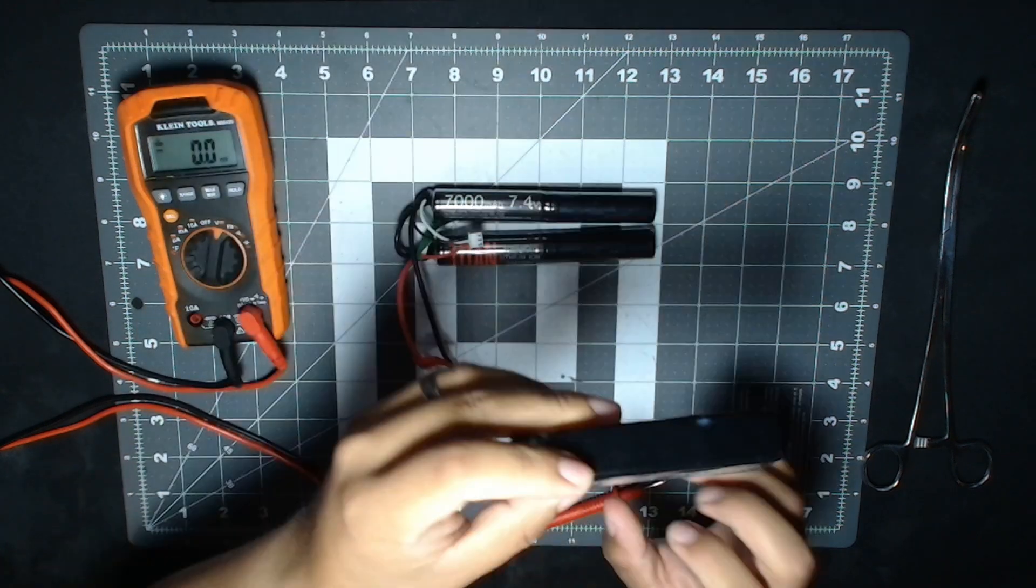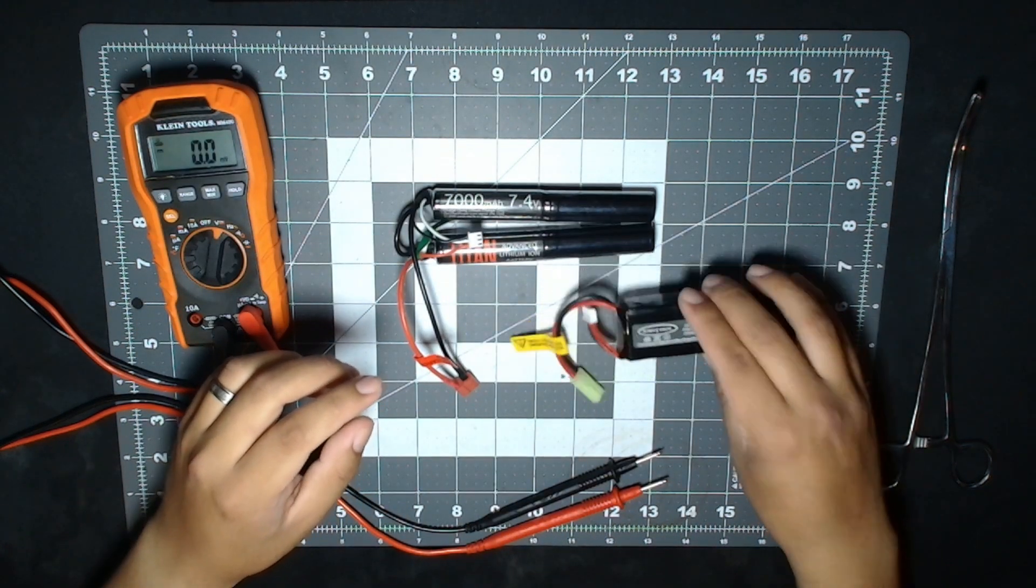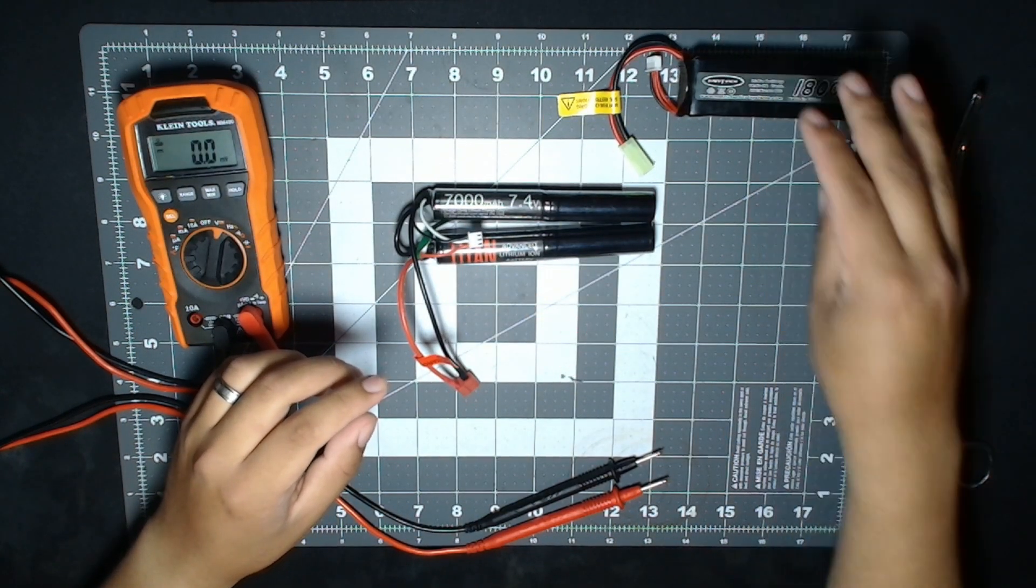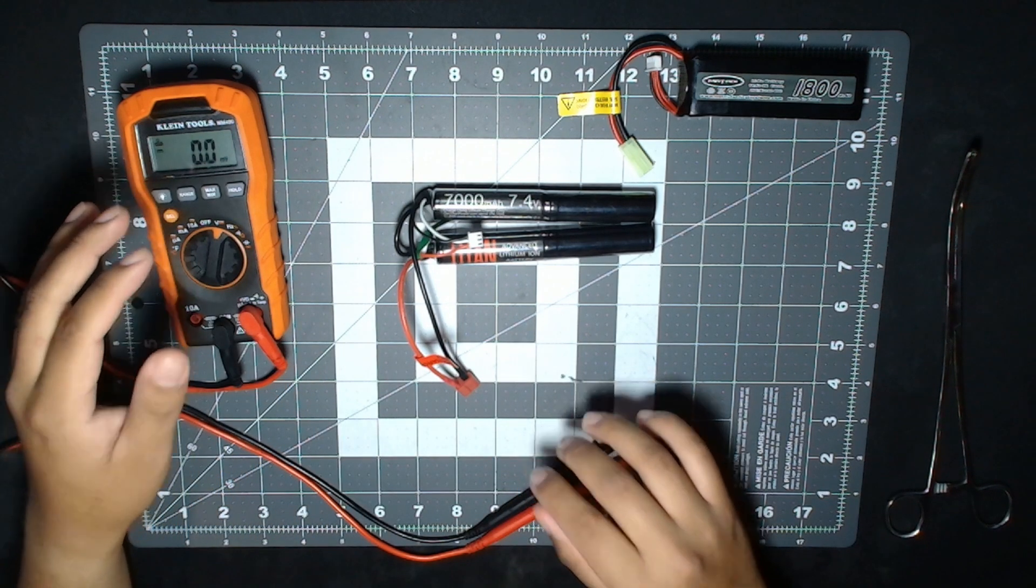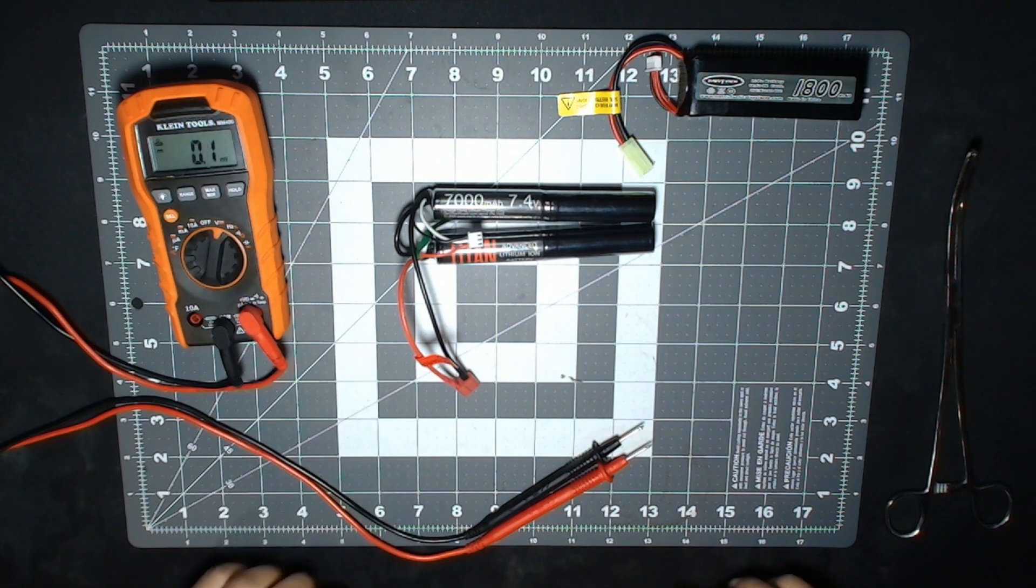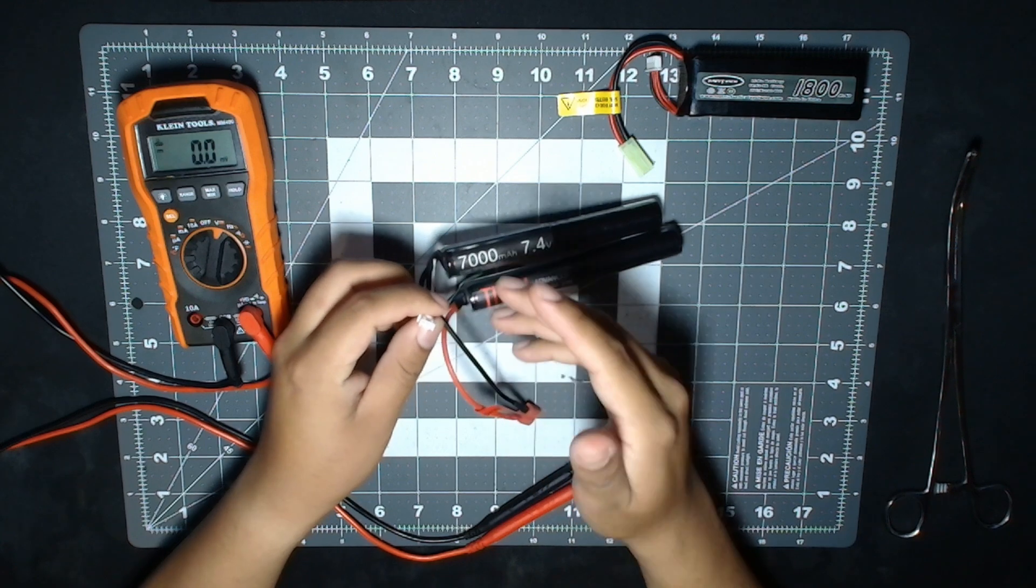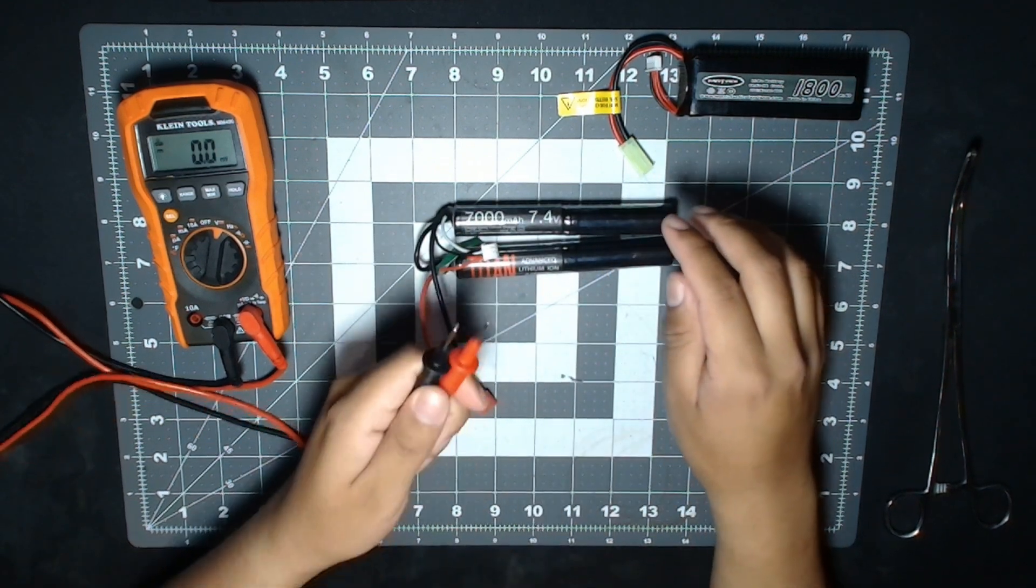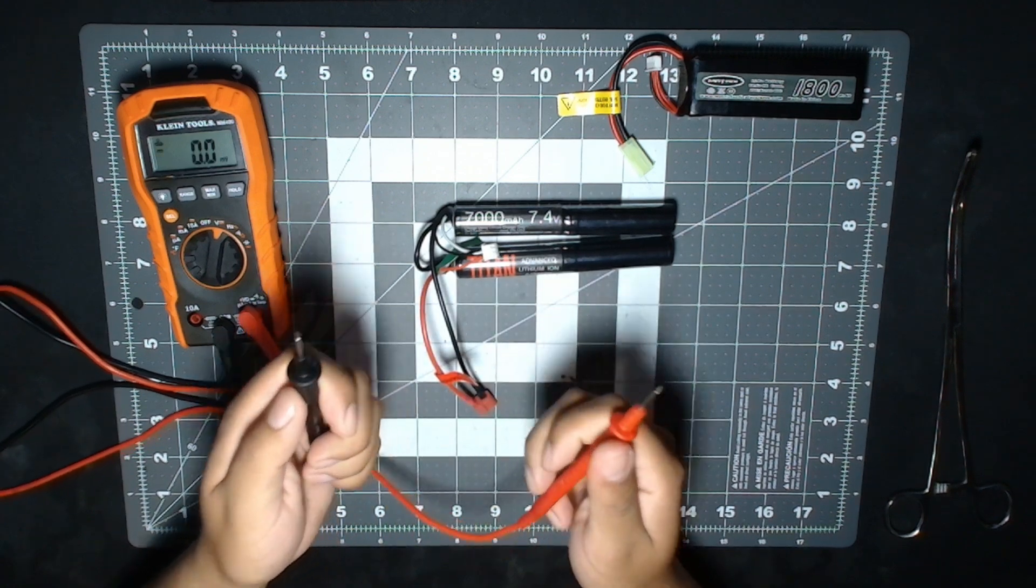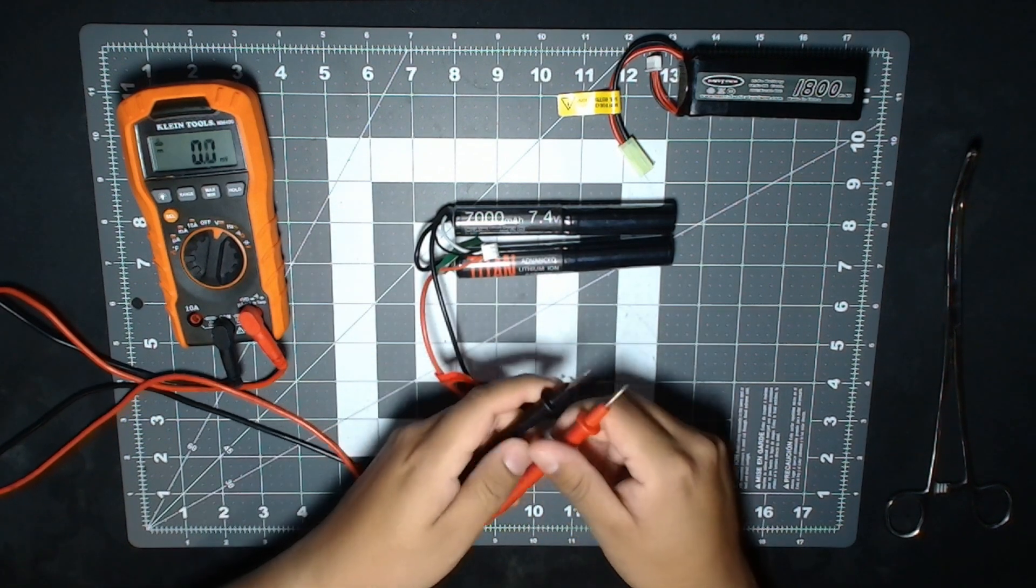The way I normally test batteries is I usually just use a voltmeter—it seems to be the easiest. You can buy little tools from Evike, like meters that plug into the balance port and tell you statistics, but it's always good to have a voltmeter on hand because you can use it for more than just airsoft.